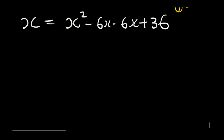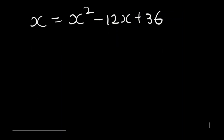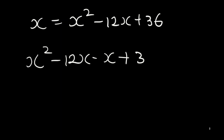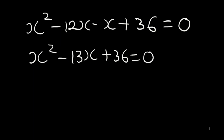Combining like terms, x equals x squared minus 12x plus 36. Transposing x to the other side gives x squared minus 12x minus x plus 36 equals 0, which simplifies to x squared minus 13x plus 36 equals 0. This is the standard form of the equation.